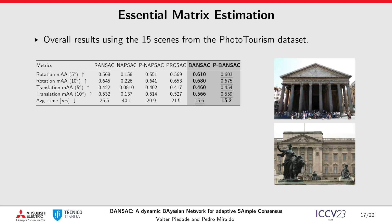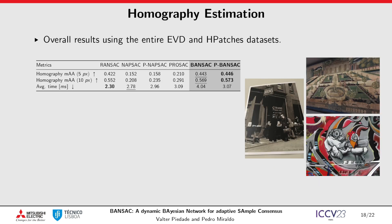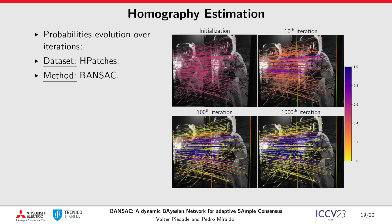For this next experiment, we ran an essential matrix estimation problem with all sequences from the phototourism dataset. Once again, BANSAC was the most accurate and P-BANSAC the most efficient. For our final experiment, we ran a homography estimation problem using the EVD and H-patches datasets. Results show that BANSAC and P-BANSAC are the most accurate methods. Here is an example of the evolution of probabilities over iterations in a homography estimation problem.